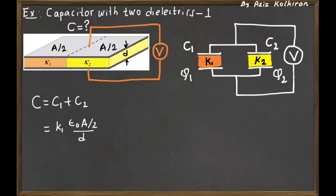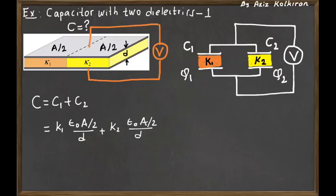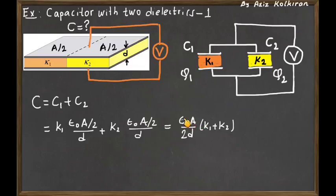It is easy to express the capacitances C1 and C2 in terms of the dielectric constant, epsilon zero, the surface area of the plates, and the thickness. C1 is K1 times epsilon zero times (A/2) divided by d. Similarly, C2 is K2 times epsilon zero times (A/2) divided by d. So the equivalent capacitance is epsilon zero times A divided by 2d, multiplied by the sum of the dielectric constants (K1 + K2).